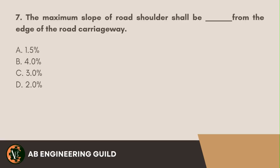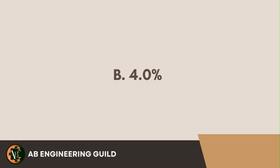Question 7. The maximum slope of a road shoulder shall be blank from the edge of the road carriageway. A. 1.5 percent. B. 4 percent. C. 3 percent. D. 2 percent. Answer: B. 4 percent.